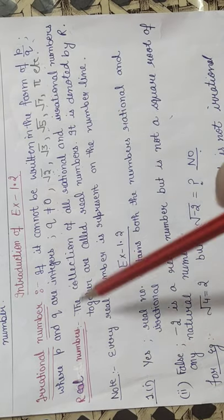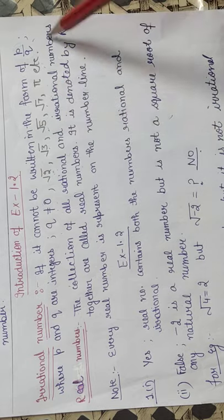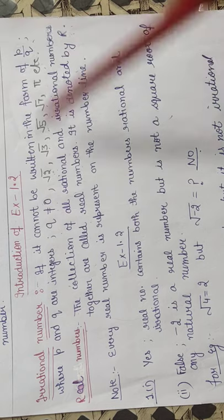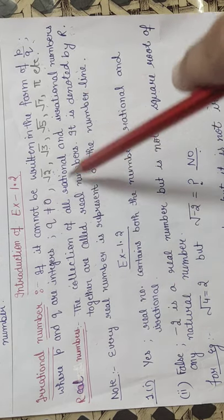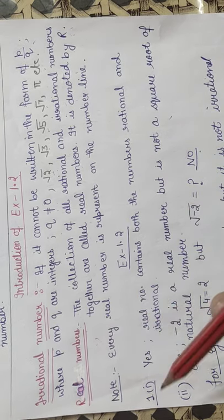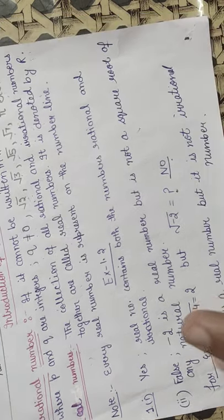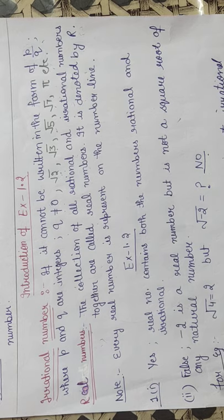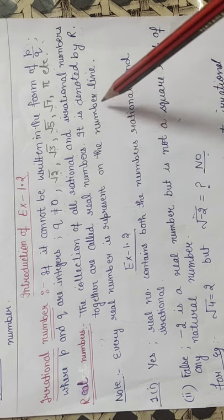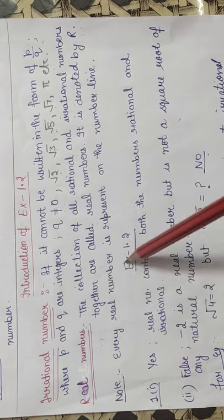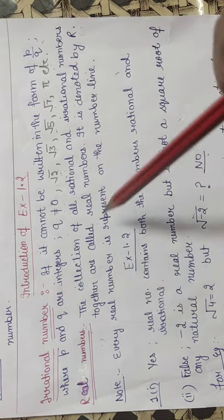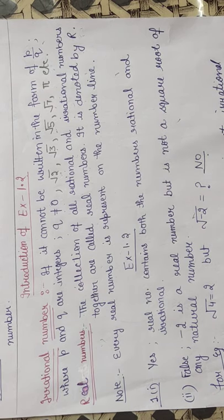The collection of all rational numbers and irrational numbers together are called real numbers. It is denoted by the letter capital R. Real numbers contain both rational and irrational numbers. We can also say real numbers are those numbers which contain natural numbers, whole numbers, integers, rational, and irrational — all kinds of numbers. Every real number is represented on the number line; we can represent any real number on the number line.